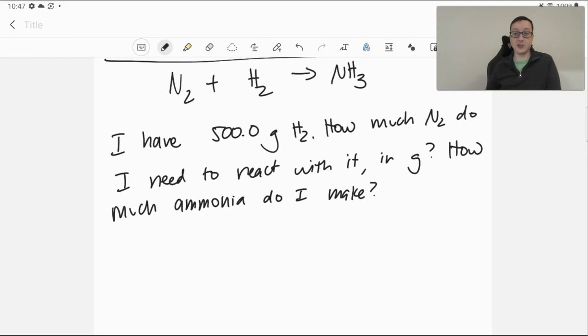All right, here's a reaction and a question that involves some quantities that we can relate to the chemical equation. Suppose I have 500 grams of hydrogen. How much nitrogen would I need to react with it in grams? And further, how much ammonia would I make from that?